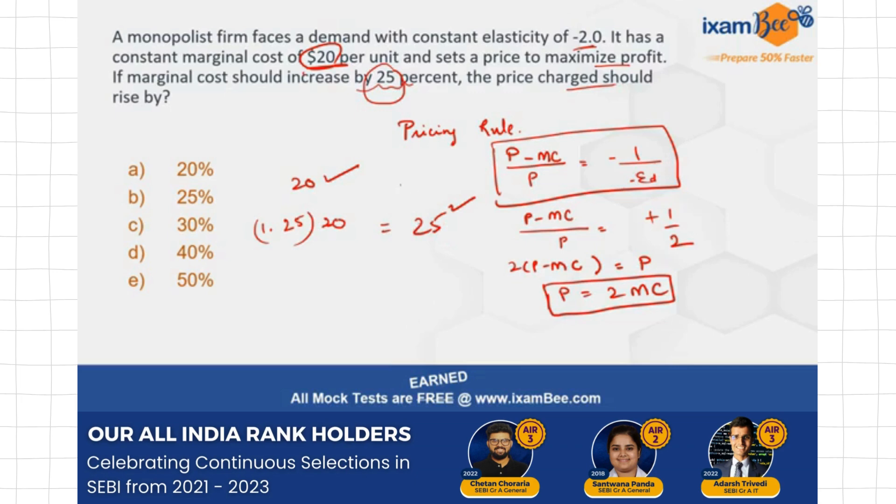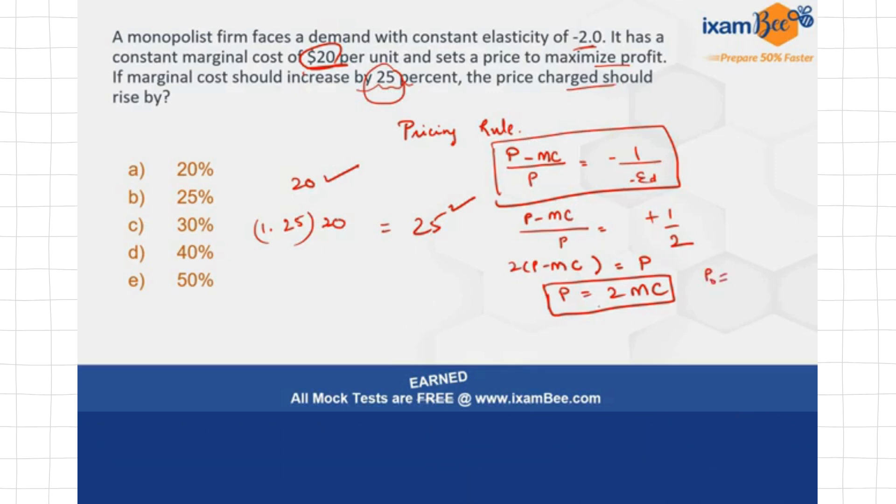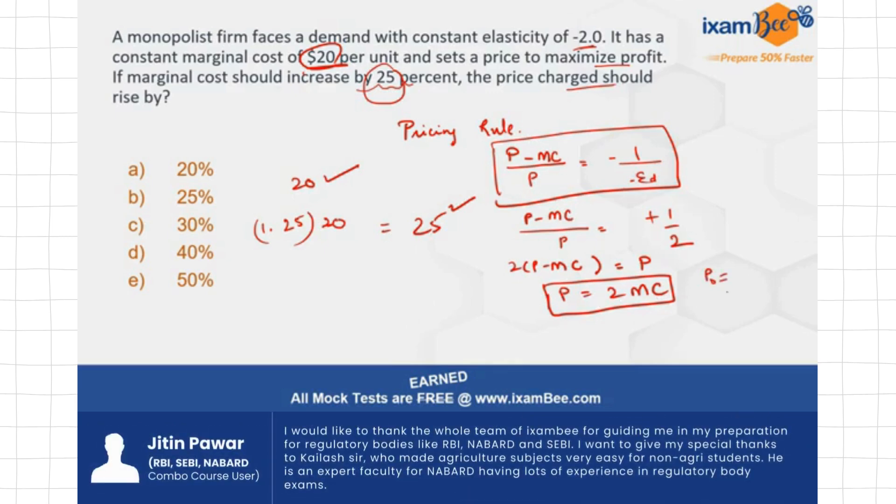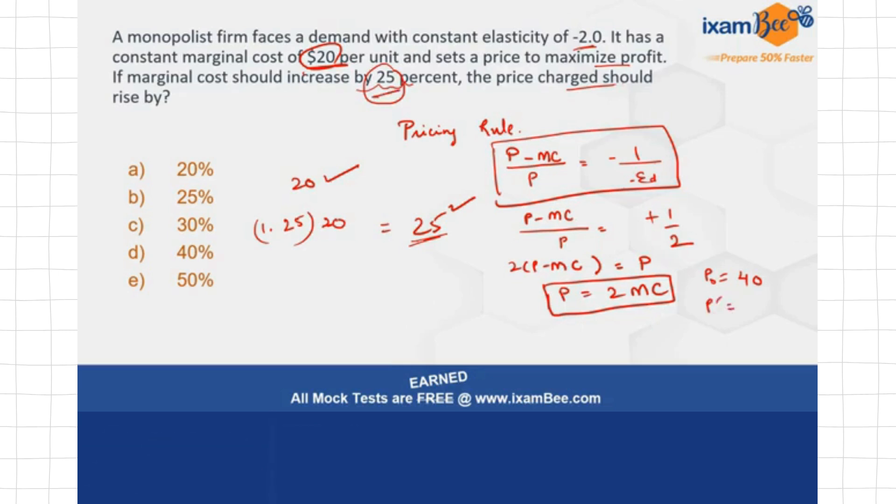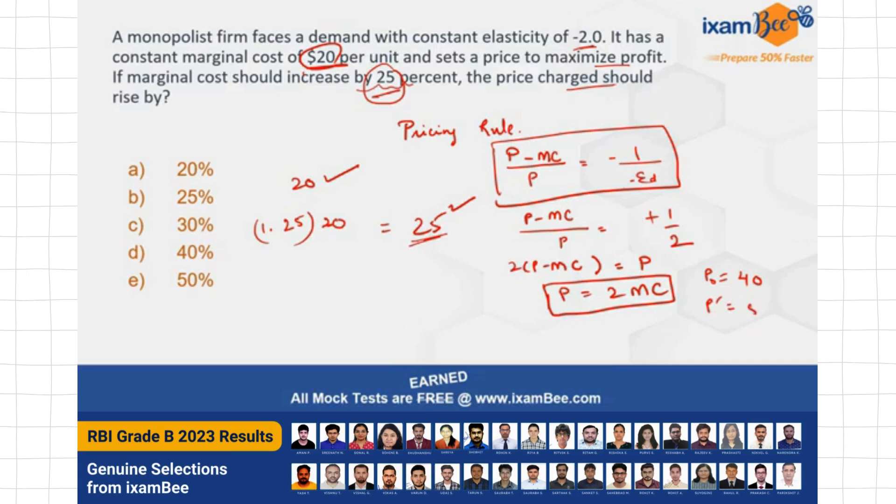So if that happens, if at the marginal cost of 20, what is my price initially? When the marginal cost is 20, price was 40, right? Now when the marginal cost increases by 25%, that means it becomes 25, then what is going to be my price? Price is going to be 25 times 2, which is 50.